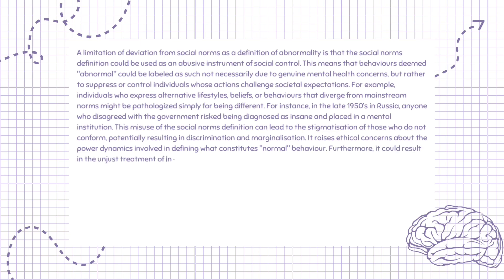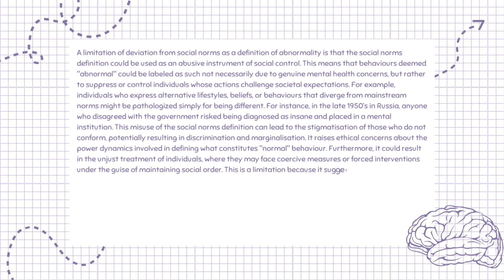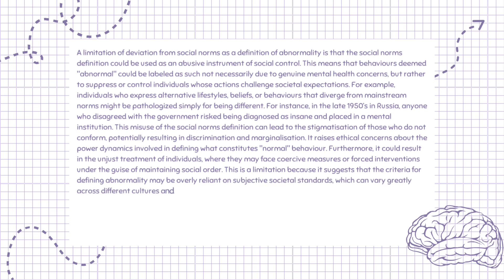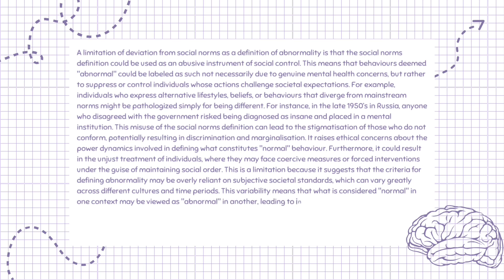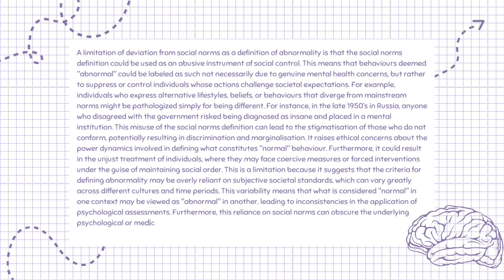Furthermore, it could result in the unjust treatment of individuals, where they may face coercive measures or forced interventions under the guise of maintaining social order. This is a limitation because the criteria for defining abnormality may be overly reliant on subjective societal standards, which can vary greatly across different cultures and time periods. This reliance on social norms can also obscure underlying psychological or medical issues, as it prioritizes conformity over individual differences and experiences.